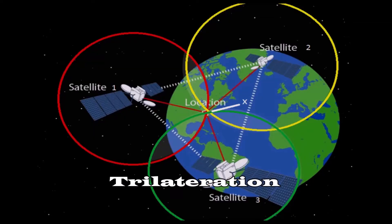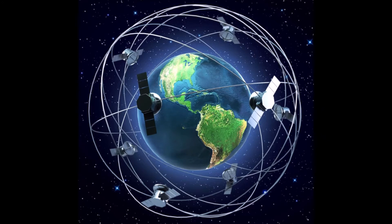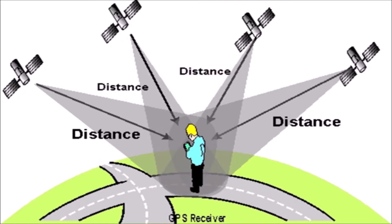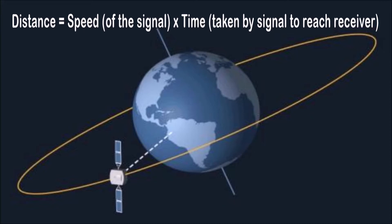The first concept is Trilateration, which literally means position from three distances. For this method, you need to know the location of the orbiting satellites and then measure the distance from your location to those satellites. The second concept is the relation between speed and time taken for the GPS signal to travel, which gives us distance. In simple math, we know distance equals speed multiplied by time.